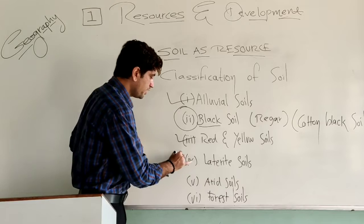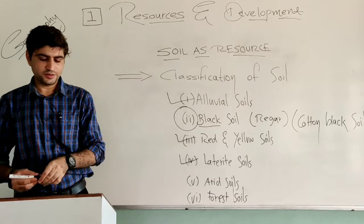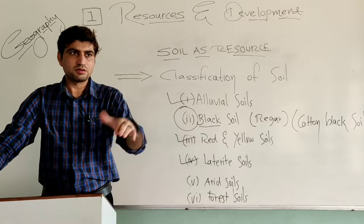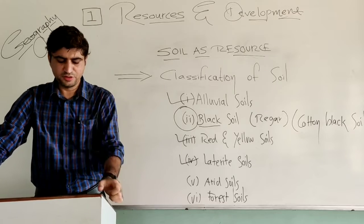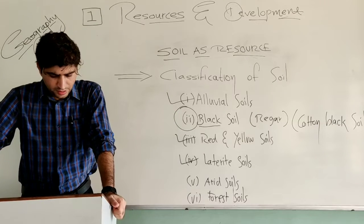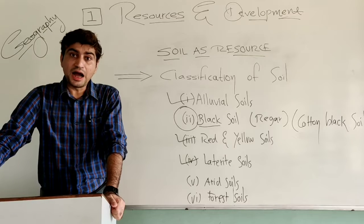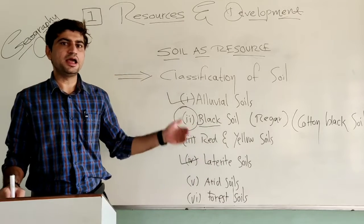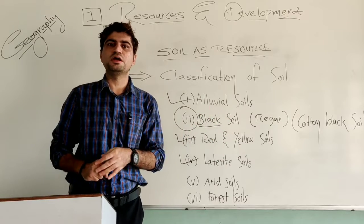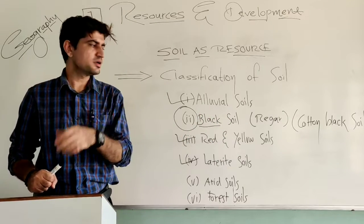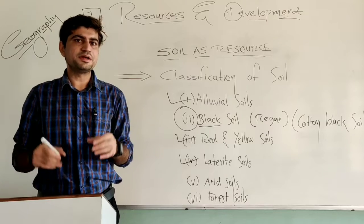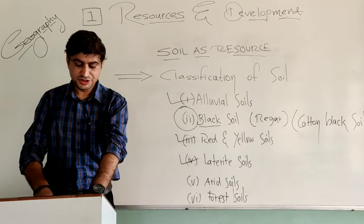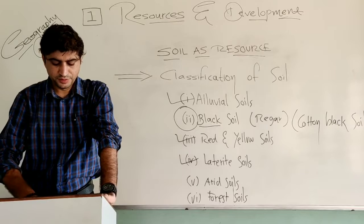Next, Laterite soil. Laterite has been derived from the Latin word 'Later,' meaning brick, because it looks like a brick. The laterite soil develops in areas with high temperature and heavy rainfall, like the southern part of India — Karnataka, Kerala, etc. — where we find high temperature and high rainfall.